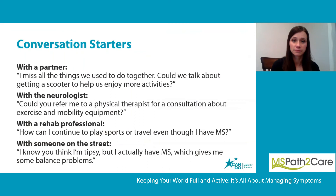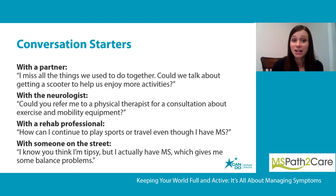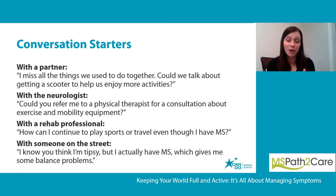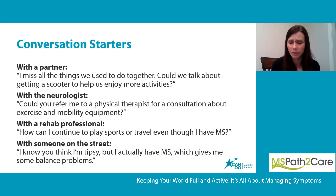So how do we get the conversation going with important people? You might suggest to your partner, 'I really miss all the things we used to do together. Could we talk about getting a scooter to help us enjoy more activities?' This conversation starter — whether from a partner to a person with MS or vice versa — sheds light on the idea that mobility aids and adaptive equipment aren't just for the person with MS. They can be for the whole family, allowing people to continue doing things together and enjoying time with one another.